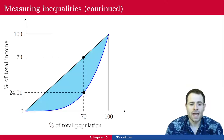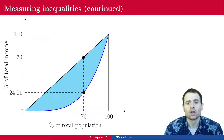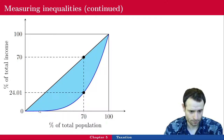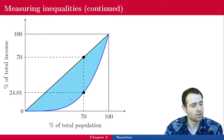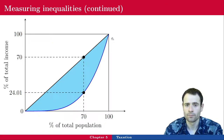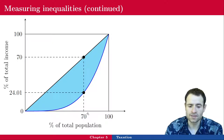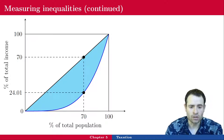On the graph, the x-axis represents the percent of the population and the y-axis represents the percentage of total income those people earn. For instance, the 10 percent poorest people on the blue curve might earn something like 1 percent of total income. You report numbers for 20, 30, 50 percent and so on. The blue curve is the Lorenz curve. For example, at 70 percent of the population, looking at the 70 percent poorest people, their share of total income ends up being 24.01 percent.